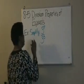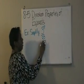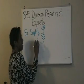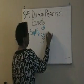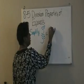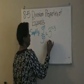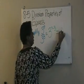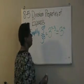So we had this example: simplify 3 to the 7th power over 3 to the 3rd power. These are dividing powers that have the same base. It ended up being 3 to the 7th power minus the 3rd power, so we get 3 to the 4th power.